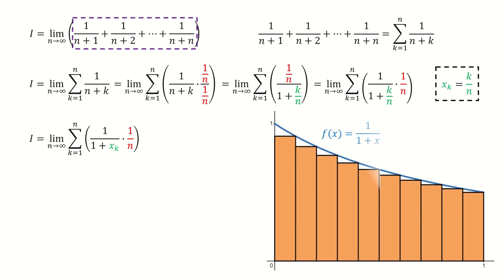And then we draw the graph for the function 1 over 1 plus x. So we divide it into n rectangles, and for each rectangle, the width is 1 over n. And next, we mark the x-coordinate for each rectangle.